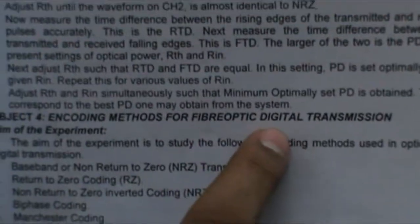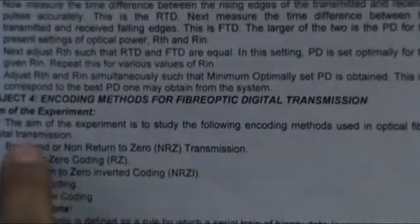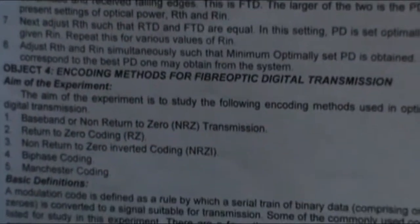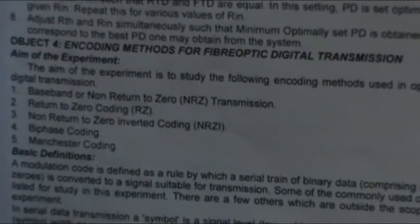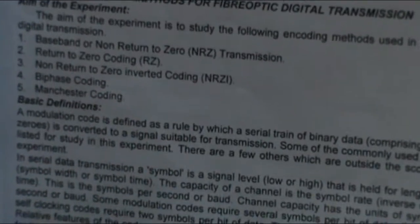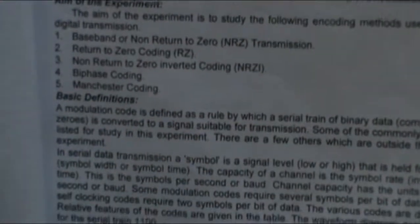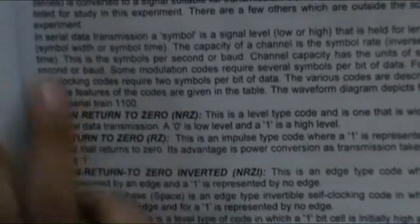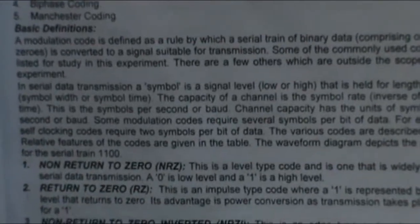Now we move on to the 4th experiment, which is encoding methods for fiber optic digital transmission. The aim is to study the following encoding methods used in optical fiber digital transmission: baseband or non-return to zero (NRZ) transmission, return to zero (RZ) coding, non-return to zero inverted (NRZi) coding, bi-phase coding, and Manchester coding. I will show the experiment connections for NRZ coding, and with the same connections you can perform the other coding types.